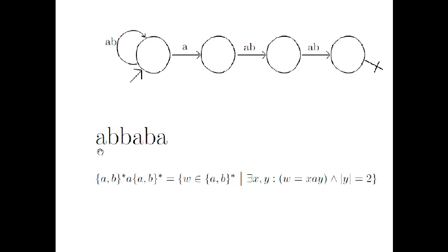Let's see one last option. We read the first A and stay in the first state, read a B and stay, read B and stay. With this A we jump to the second state, with this B we jump to the third state, and with the last A we jump to the last state. This is an accepting state — we have an accepting execution.